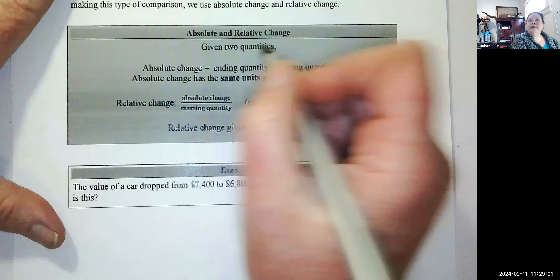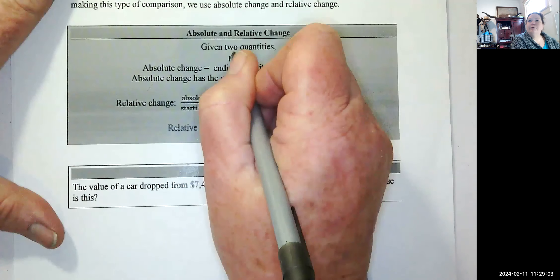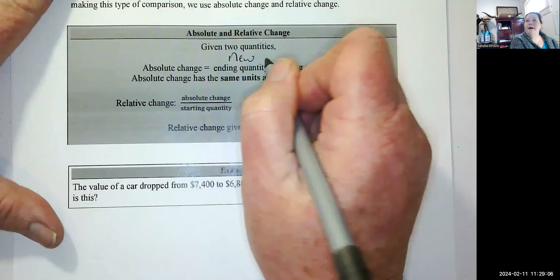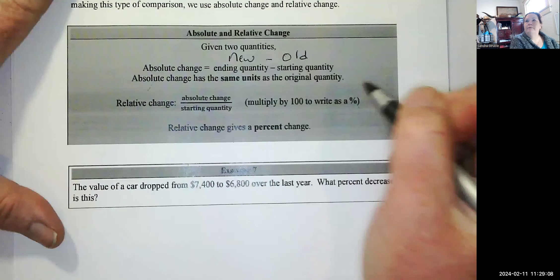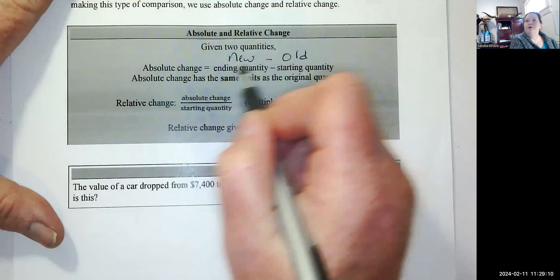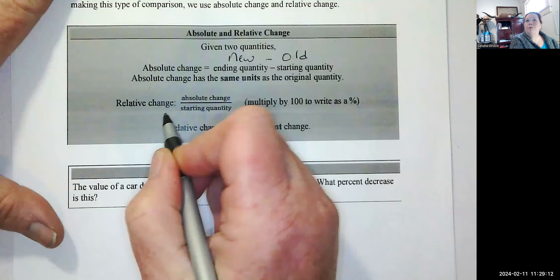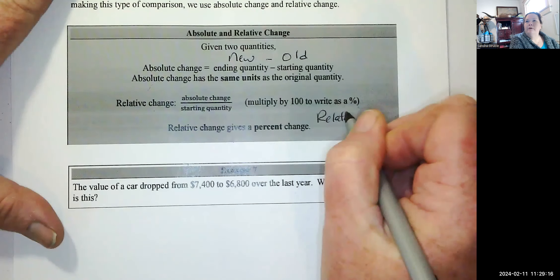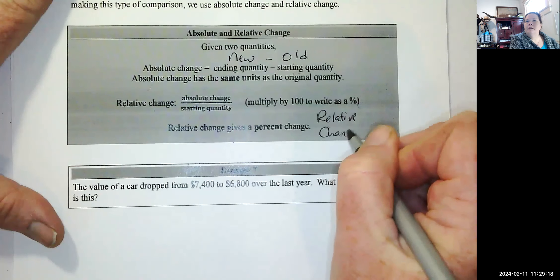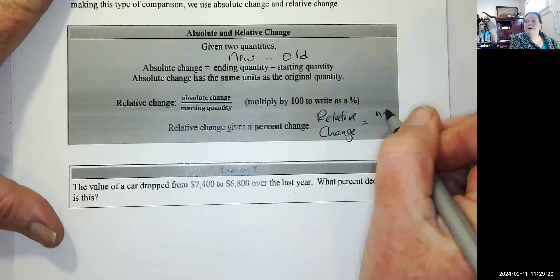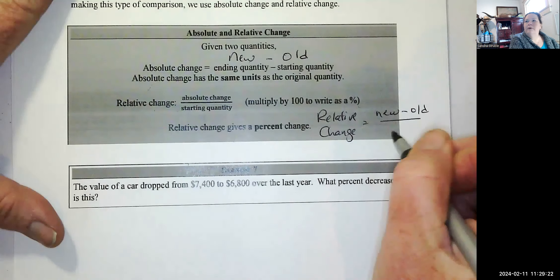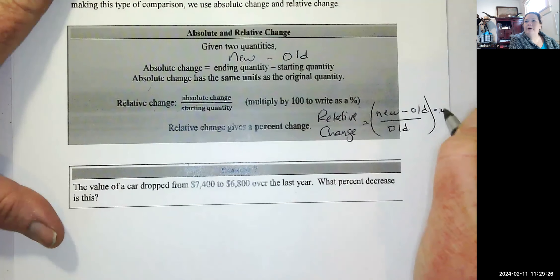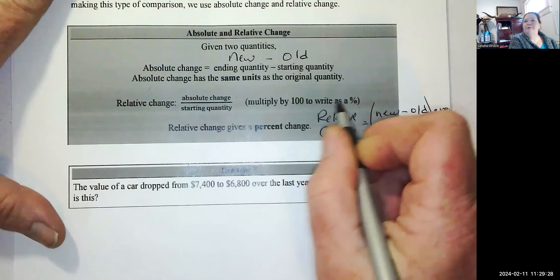In class, instead of 'ending quantity' I said 'new,' so it's the new value minus the old value. Absolute change is new minus old. Relative change is the same idea: new minus old divided by old, then multiply the whole thing by 100 because it needs to be a percent.